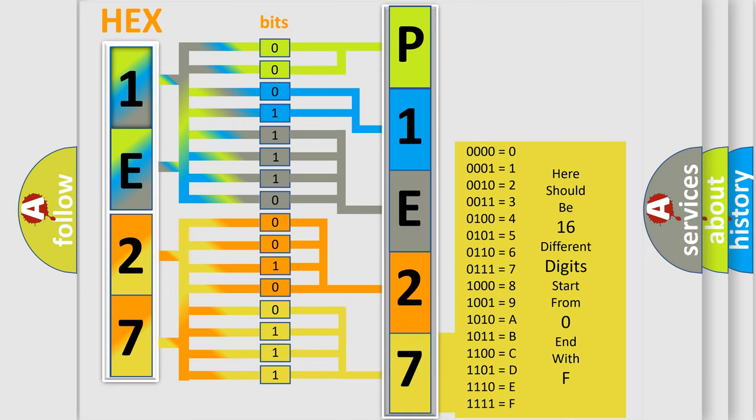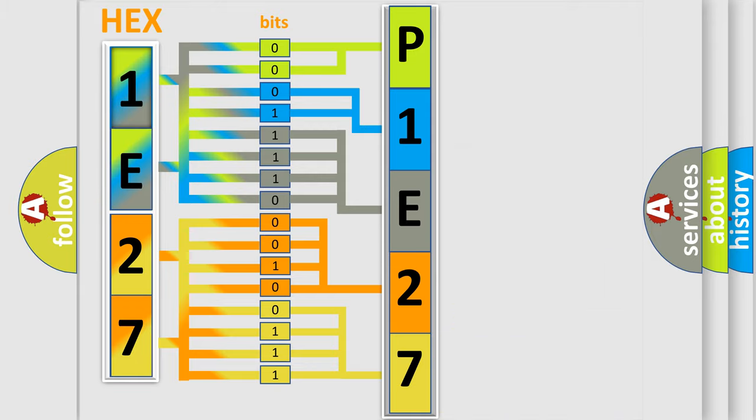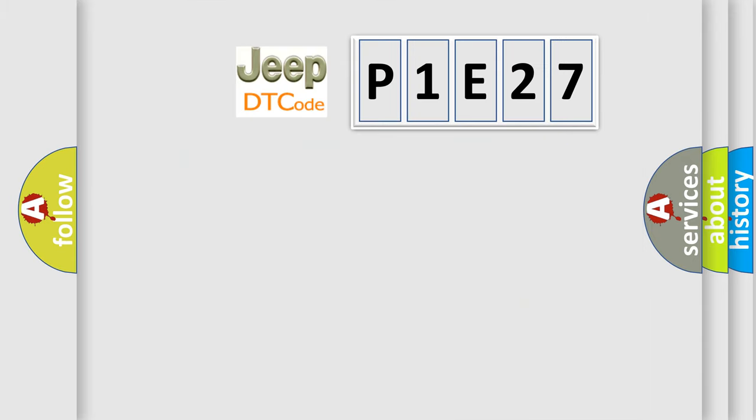We now know how the diagnostic tool translates the received information into a more comprehensible format. The number itself does not make sense to us if we cannot assign information about what it actually expresses. So, what does the diagnostic trouble code P1E27 interpret specifically for Jeep car manufacturers?